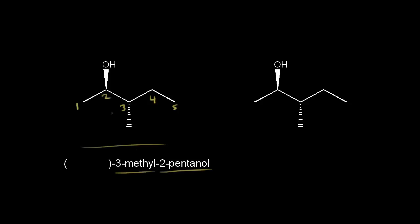But we need to put in stereochemistry, because we know from an earlier video that carbon two is a chiral center, and carbon three is a chiral center. So we need to use the RS system to finish our name. Let's focus in at carbon two, and this drawing on the right will determine the configuration at this chiral center.